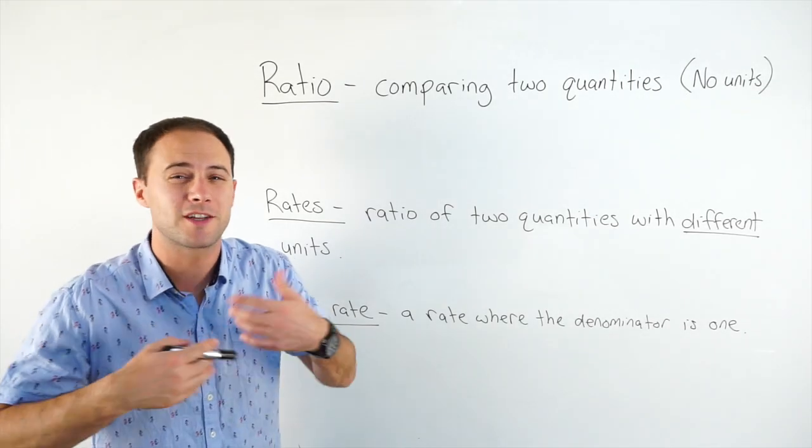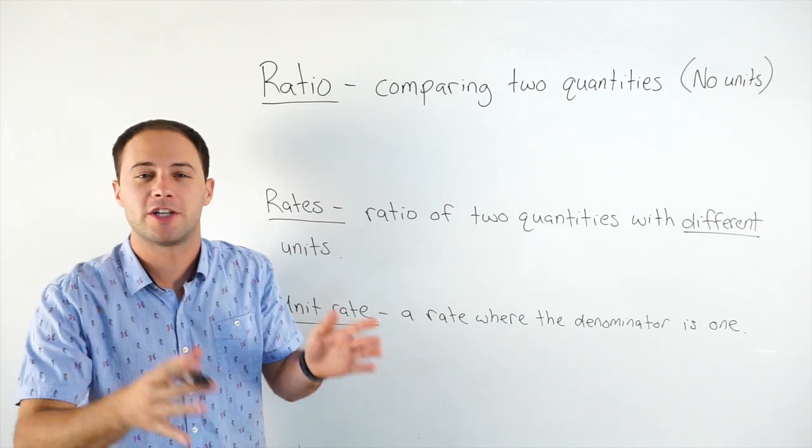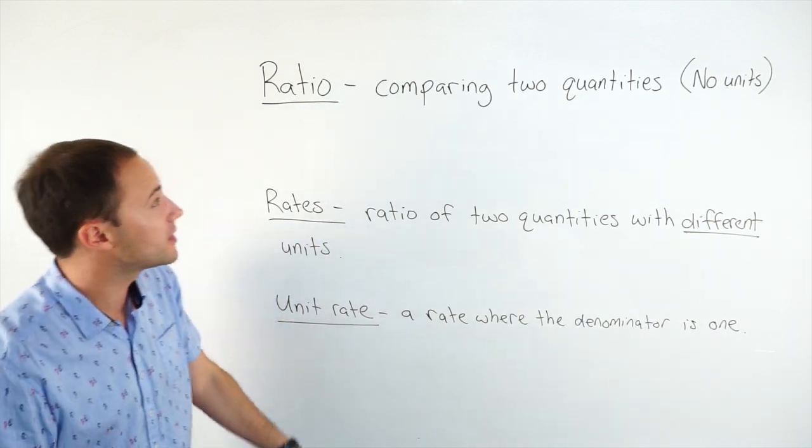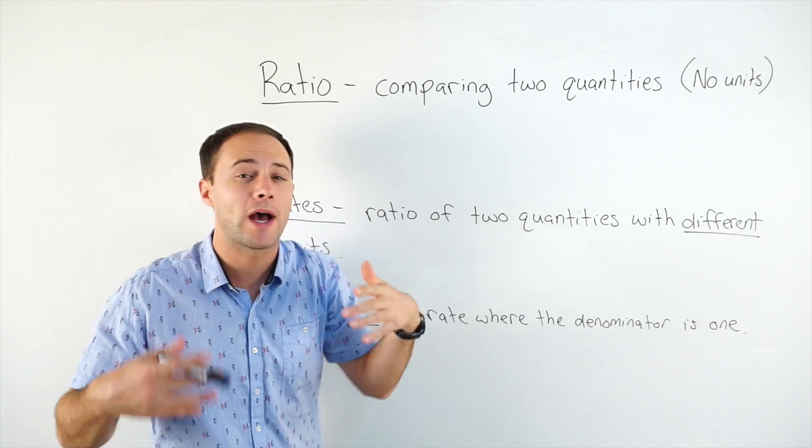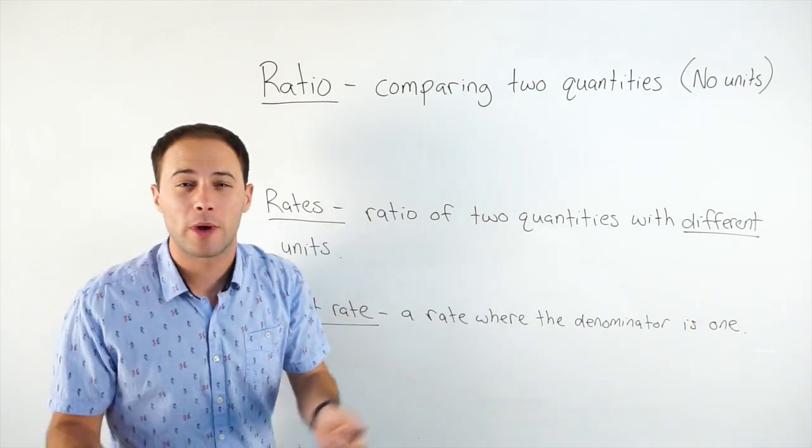Before we get into our first example, just a quick recap on ratios and rates and unit rates. So first, a ratio. That's just a way of comparing two quantities. You don't have units, and there's three ways you can write it.